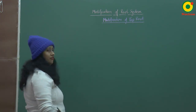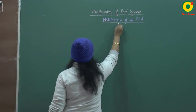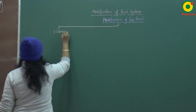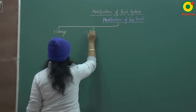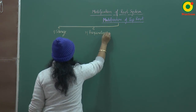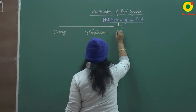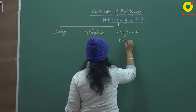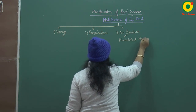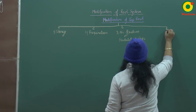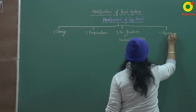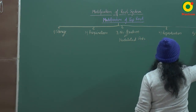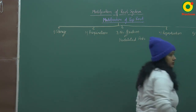In the case of tap root system, there are five types of modification. First is for storage, second is for respiration, third is for nitrogen fixation — those roots are also known as nodulated roots. Fourth modification is for reproduction, and the fifth is for support — that is the buttress root.